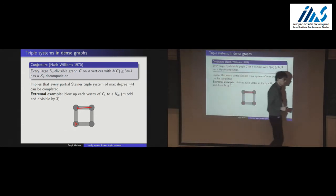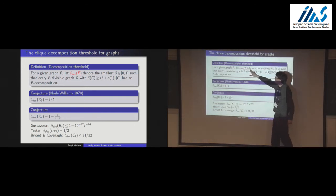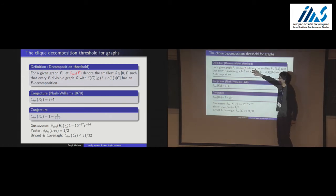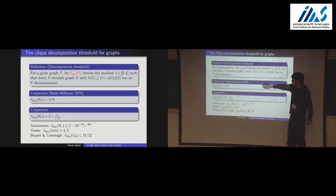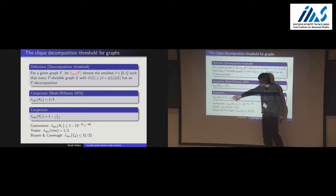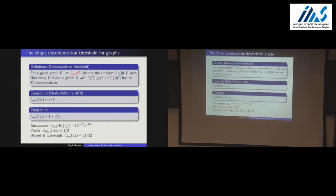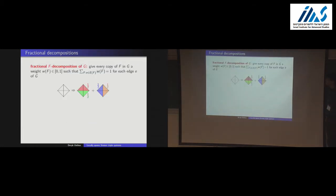That's a beautiful conjecture but still open. It motivates a more general problem: you can ask this for any graph or hypergraph, giving the notion of the decomposition threshold. Nash-Williams' conjecture would imply the decomposition threshold of a triangle is 3/4. Gustafsson conjectured a natural generalization to cliques, but until recently not much was known.